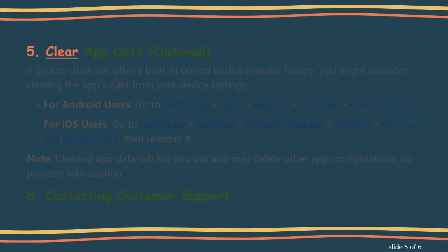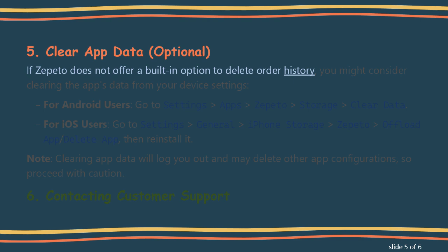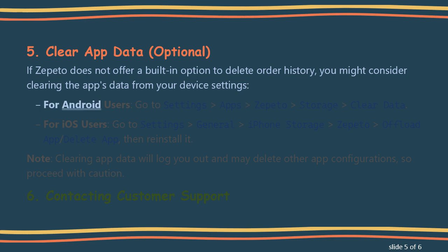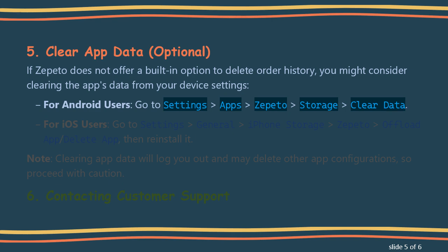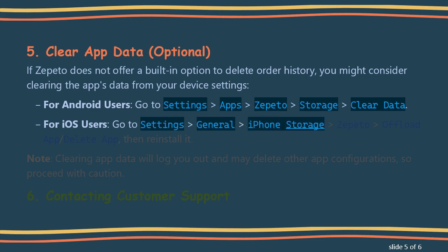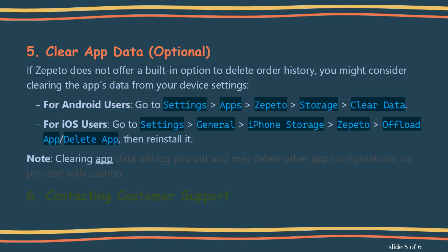Step 5: Clear App Data. If Zepetto does not offer a built-in option to delete order history, you might consider clearing the app's data from your device settings. For Android users, go to Settings > Apps > Zepetto > Storage > Clear Data. For iOS users, go to Settings > General > iPhone Storage > Zepetto > Offload App or Delete App, then reinstall it. Note: clearing app data will log you out and may delete other app configurations, so proceed with caution.